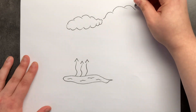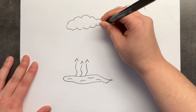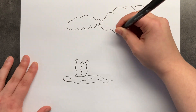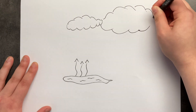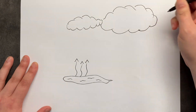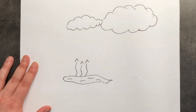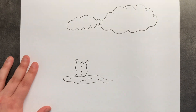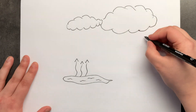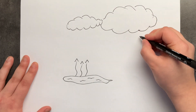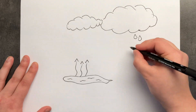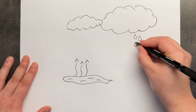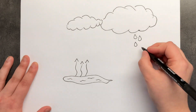As it gets colder and colder, and more water droplets emerge, the clouds get bigger and much heavier. When the cloud gets heavy enough, the water droplets become bigger, and then they start to fall down back onto the ground. This is how rain happens.